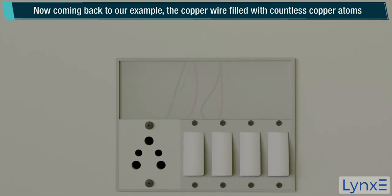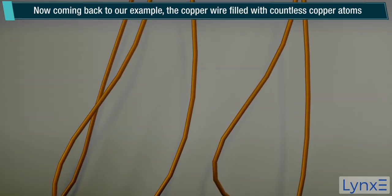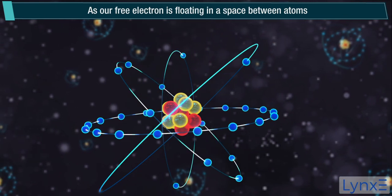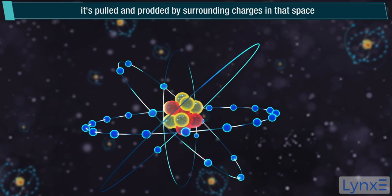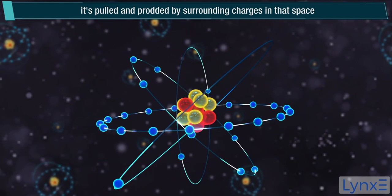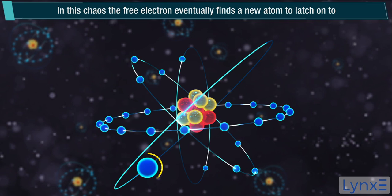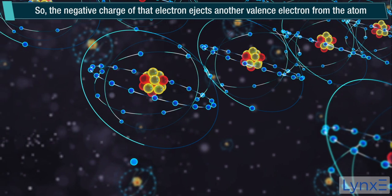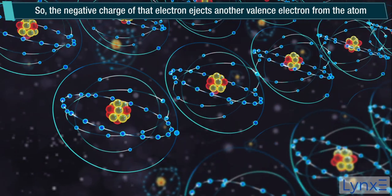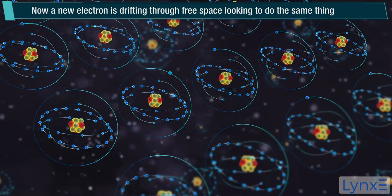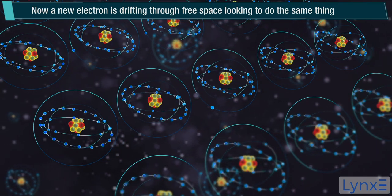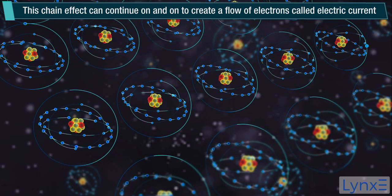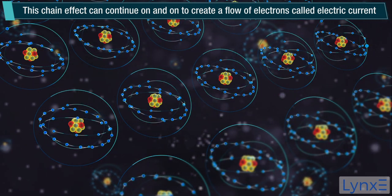Now coming back to our circuit example. The copper wire filled with countless copper atoms. As our free electron is floating in a space between atoms, it's pulled and prodded by surrounding charges in that space. In this chaos the free electron eventually finds a new atom to latch onto. So, the negative charge of that electron ejects another valence electron from the atom. Now a new electron is drifting through free space looking to do the same thing. This chain effect can continue on and on to create a flow of electrons called electric current.